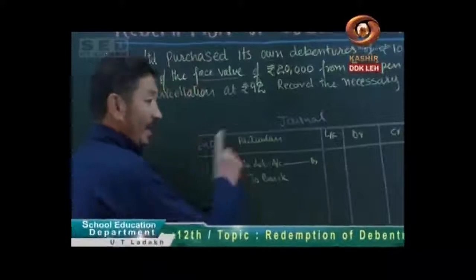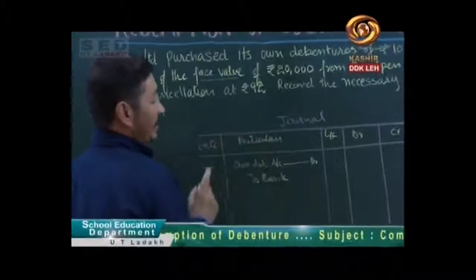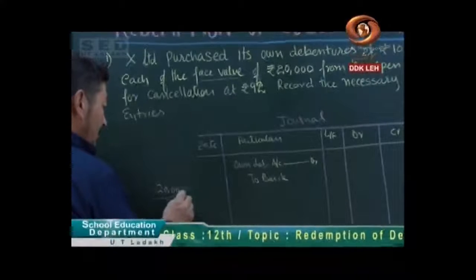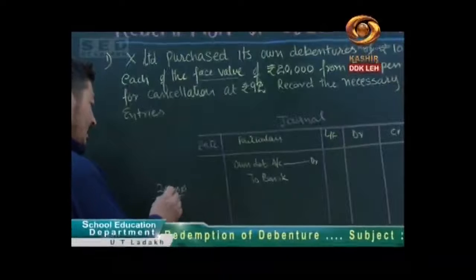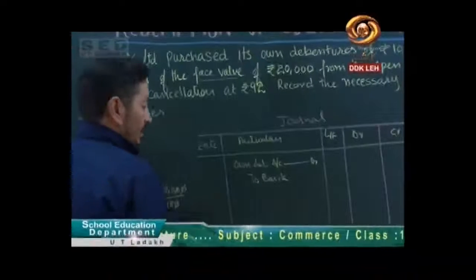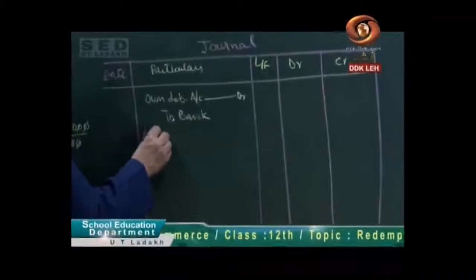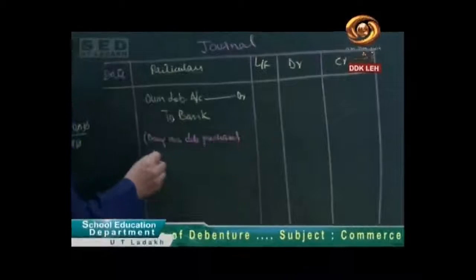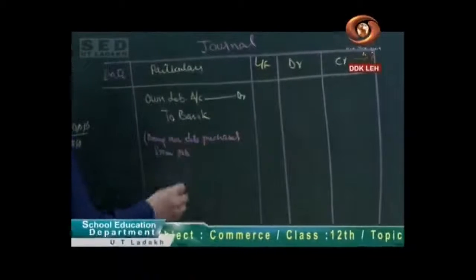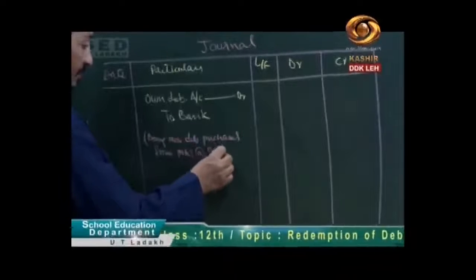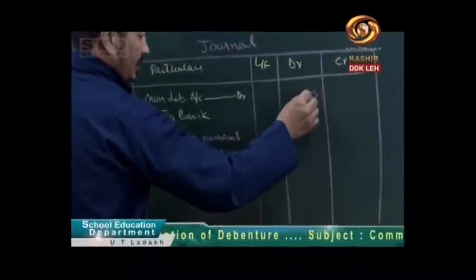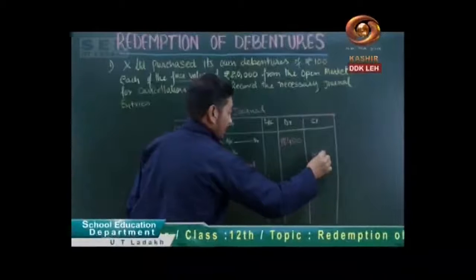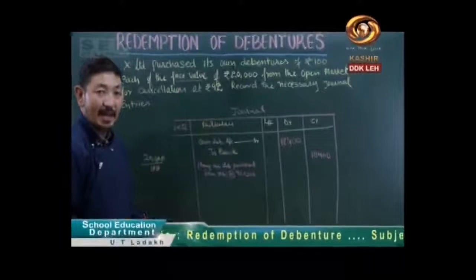We have bought our debenture from the share market. The purchase price is Rs. 92. How much is our total debenture? 20,000 face value at 100. We will cancel the debenture. Being debenture purchased from open market at the rate of rupees 92. The total amount is 200 debentures — that is 18,400.